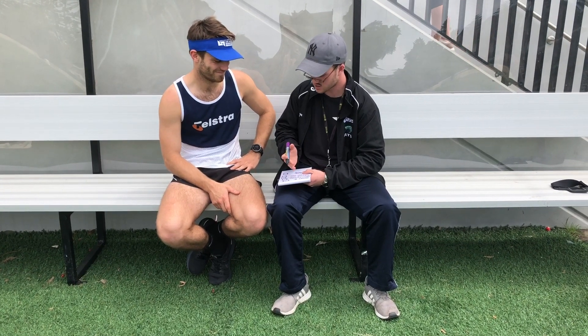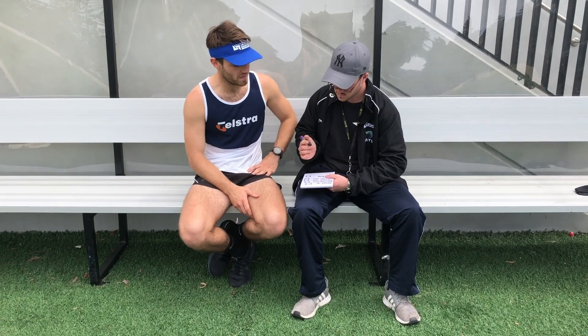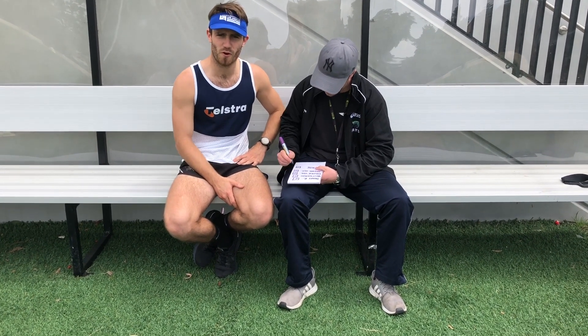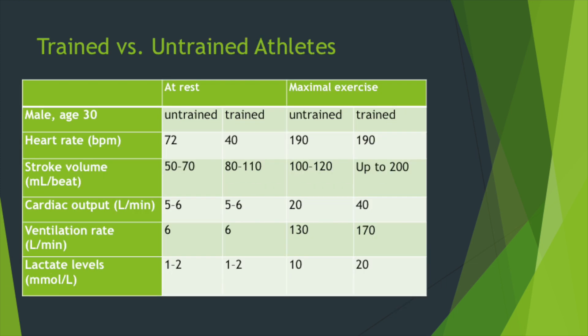So Nick, can you tell me what you've learned in regards to the physiological responses to training? Yeah, I've learned that heart rate, ventilation, stroke volume, cardiac output, and lactate levels all increase during training and they all impact our performance. In summary, the body demonstrates five immediate physiological responses to exercise: changes to heart rate, ventilation rate, stroke volume, cardiac output, and lactate levels. All components increase proportionally to the intensity of training. These changes occur to allow the working muscles to receive an increased supply of oxygen and nutrients and to remove waste such as carbon dioxide. Trained athletes will also be more efficient in all physiological responses.